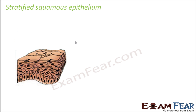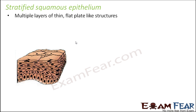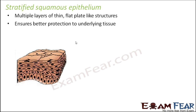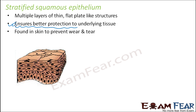Talking about stratified squamous: here we have multiple layers of thin, flat plate-like structures. It is basically the same as simple squamous epithelium, just with many layers instead of one. This ensures better protection to the underlying tissue. The thicker the layer, the more protective it will be. It is generally found in skin to prevent wear and tear.